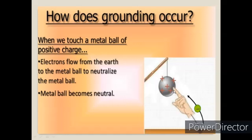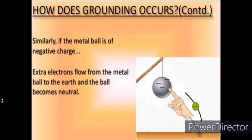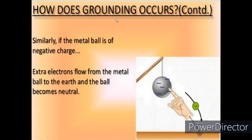When we touch a metal ball of positive charge, electrons flow from the earth to the metal ball to neutralize it, and the metal ball becomes neutral. Similarly, if the metal ball is negatively charged, extra electrons flow from the metal ball to the earth and the ball becomes neutral.